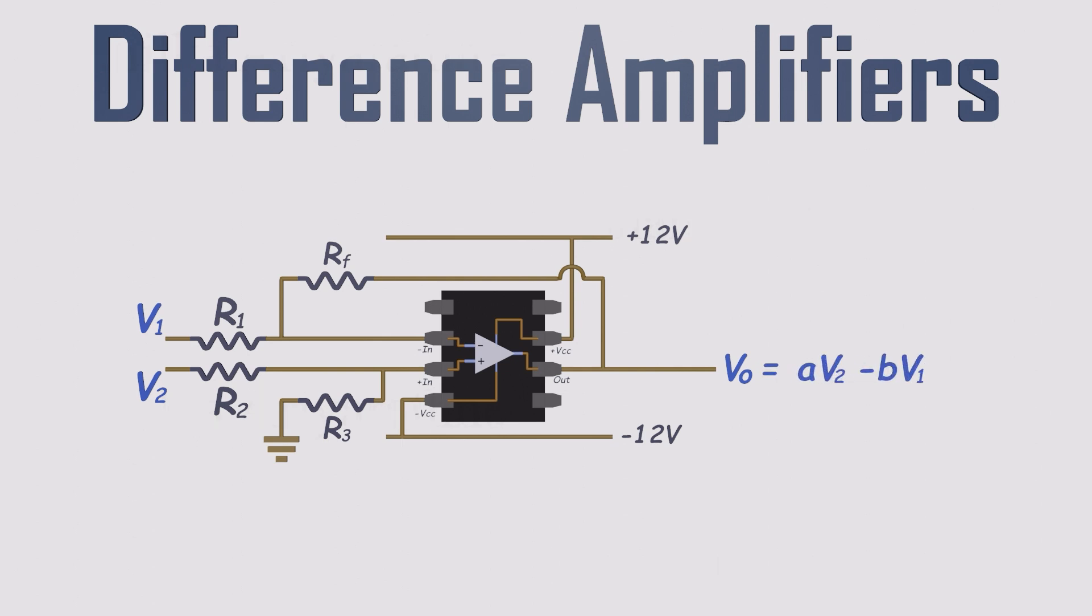The output voltage comes out as a weighted difference between the two inputs. And don't worry about the word weighted. If we choose the resistor values carefully, the output becomes simply the difference between the input voltages. Sounds almost too simple, right? Let's prove it by walking through the fundamentals.